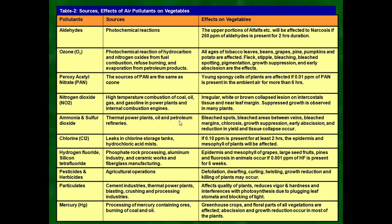Now we will see the effects on vegetation. Pollutants affecting plants include aldehydes, ozone, peroxyacetyl nitrate (PAN), nitrogen dioxide, ammonia, sulfur dioxide, chlorine, hydrogen fluoride, silicon tetrafluoride, pesticides, herbicides, particulates, and mercury. The first is aldehydes, which come from petrochemical reactions. If 250 ppm of aldehyde is present for two hours, the leaf portions will be affected with necrosis — very high risk and bad impact on vegetables.